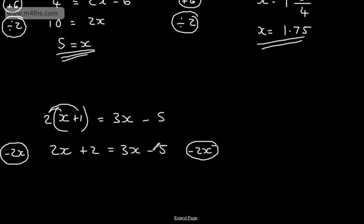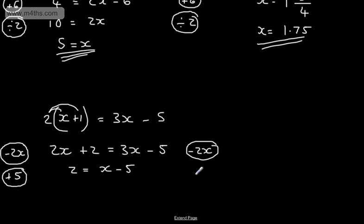Taking 2x from both sides: on the left-hand side I'm just going to have 2, and on the right-hand side I'm going to have x minus 5. I just want x by itself, so I'm going to add 5 to both sides. Every time I perform one of these operations I'm doing the opposite. Adding 5 to both sides: 2 plus 5 is 7, so x equals 7.